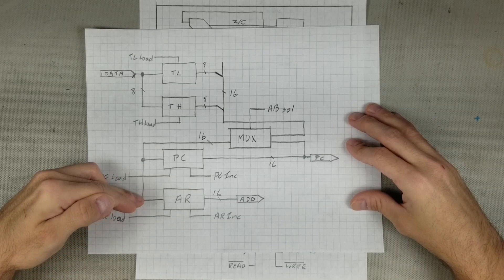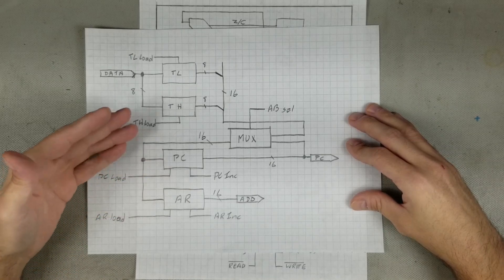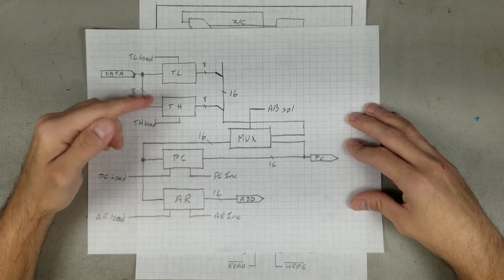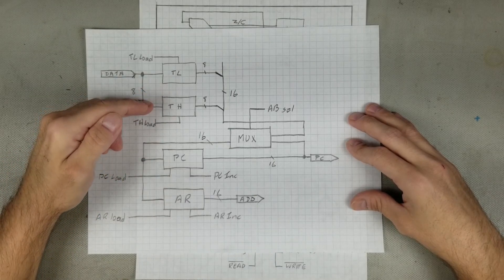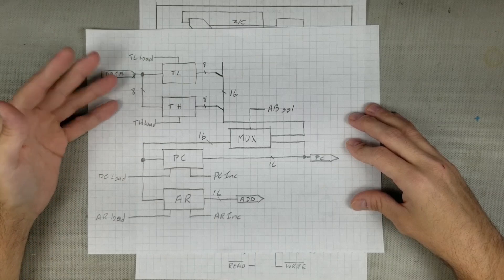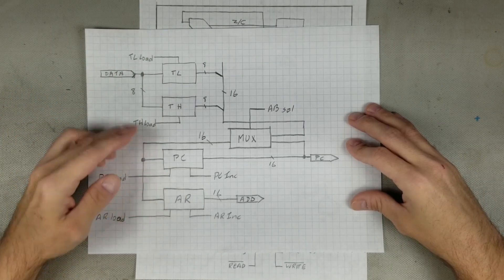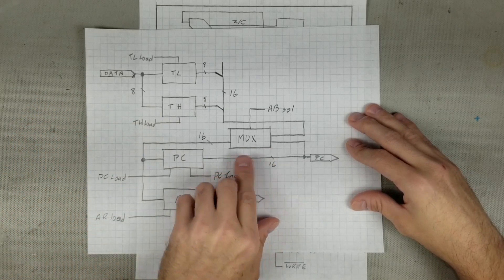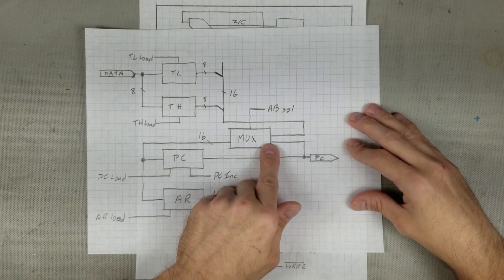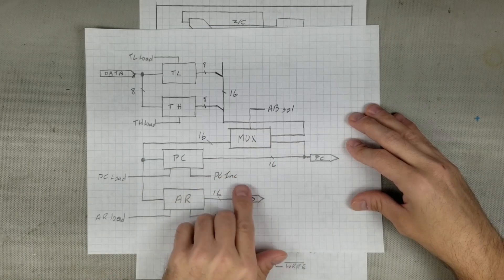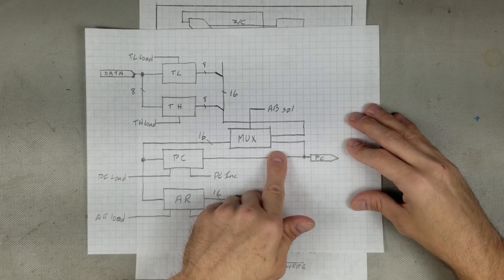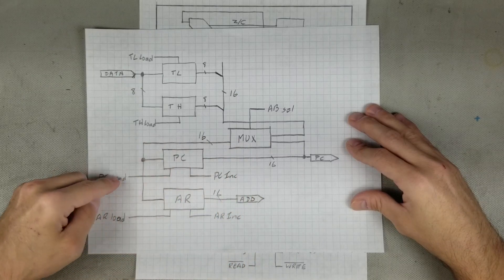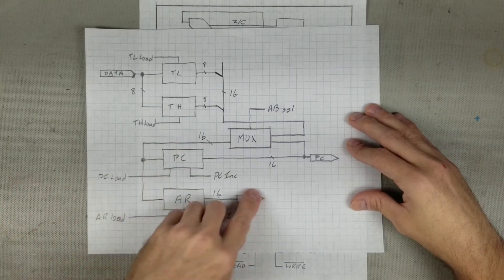During an instruction fetch, the address register needs to be loaded with the program counter. But during a jump instruction, the program counter needs to be loaded with the value that's stored in the TL and TH registers. As well, during a store instruction, the address register needs to be loaded with the TL and TH registers. This can be done by using a MUX with one input being the combined TL and TH registers, and the other input being the program counter. The output of the MUX then feeds the inputs to the program counter and address register, and is controlled by the AB select line.